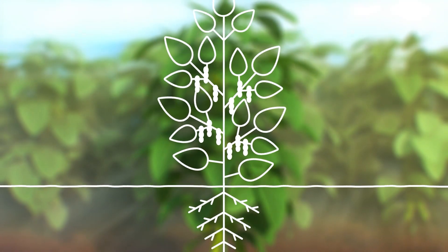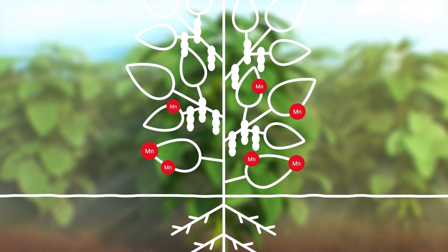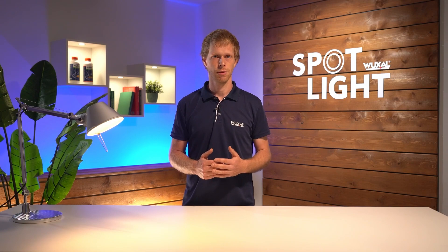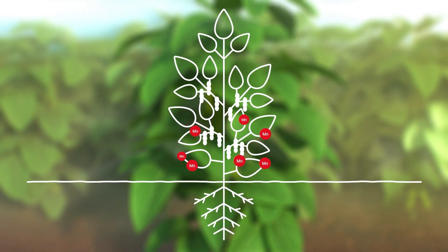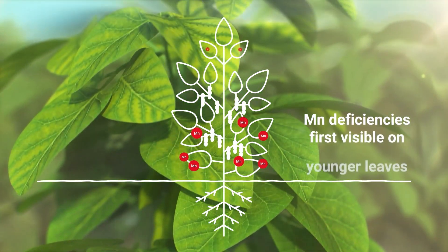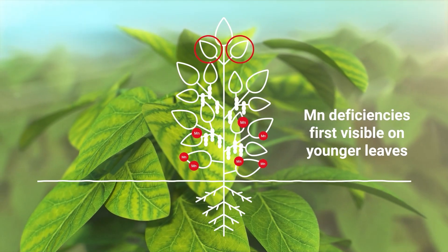Other nutrients, such as manganese, cannot be transported well between plant organs. In cases of a manganese deficiency from the soil, the plant cannot shift the remaining manganese from older leaves to another place. Therefore, deficiencies of manganese occur mostly on younger leaves, which limits plant growth.